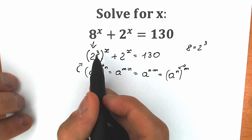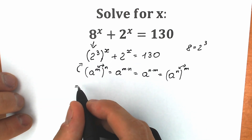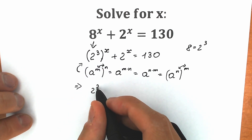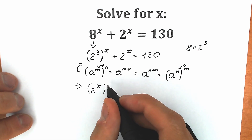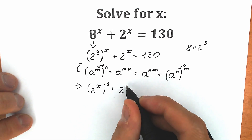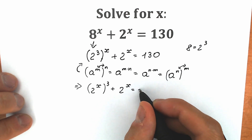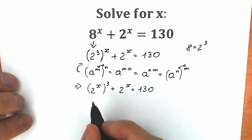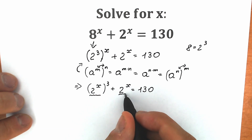We can easily swap the 3 and x positions. So we have 2 to the power x raised to the power 3, plus 2 to the x, equal to 130. If you look closely, we have 2 to the x appearing in both terms.